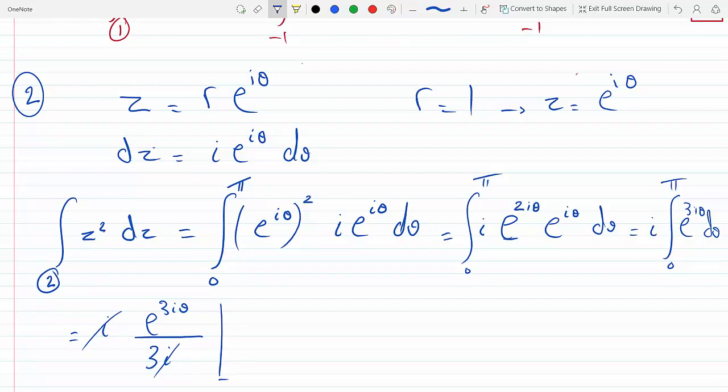This is going from zero to pi, and so this is one third times e to the three i pi minus e to the zero, which is one.